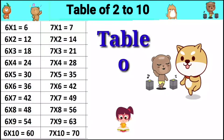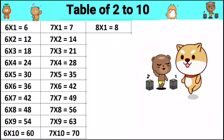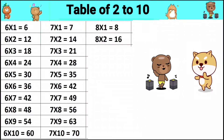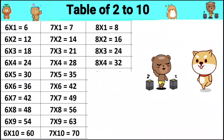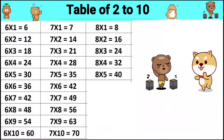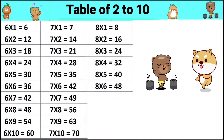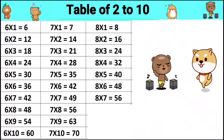Table of 8. 8 ones are 8, 8 twos are 16, 8 threes are 24, 8 fours are 32, 8 fives are 40, 8 sixes are 48, 8 sevens are 56.